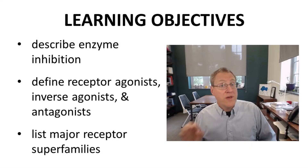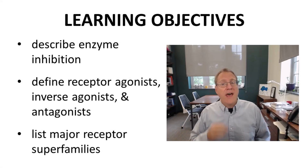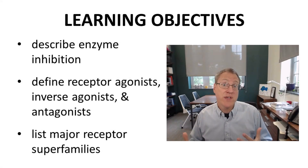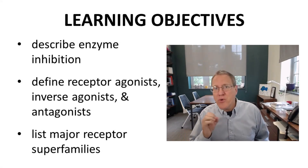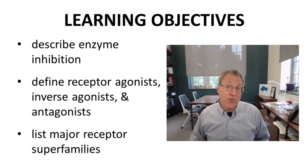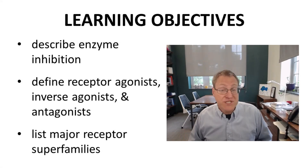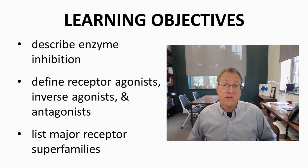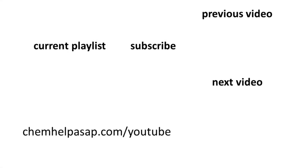We have now covered enzymes as targets for inhibition, the different types of receptor ligands, as well as the most commonly cited examples of receptor superfamilies. As always, thank you for watching. I hope you enjoyed this video about targets and types of ligands. If you are so inclined, please be sure to leave a like, make a comment, or subscribe to the channel. Take care.